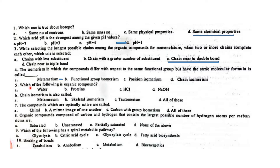Which of the following is an organic compound? Very simple — it is the protein. The isomerism also called skeletal isomerism is chain isomerism.